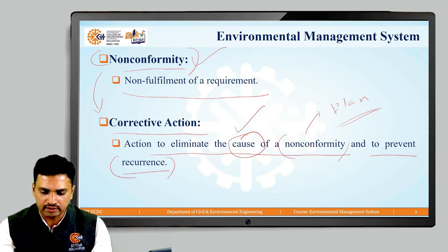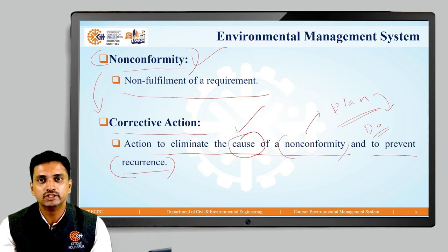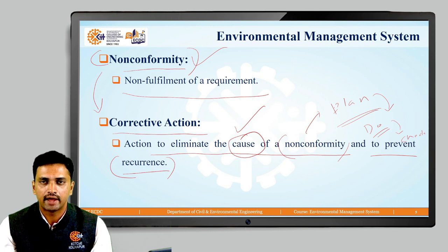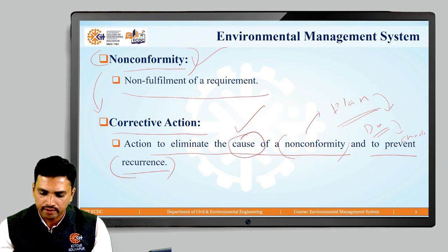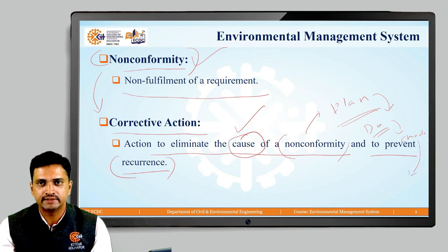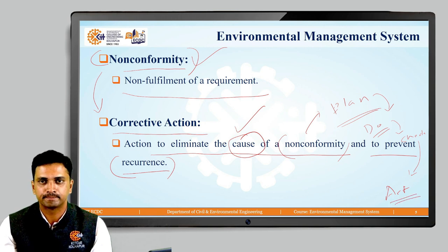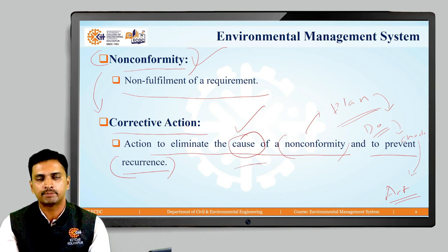Even after planning, during its implementation — the 'do' part — care needs to be taken that all the planning is executed. The necessary checking has to be done in order to verify the performance of the system. Usually these corrective actions come in the 'act' part, that is the last part of the PDCA approach, where we can suggest improvement after analyzing the cause of non-conformity.